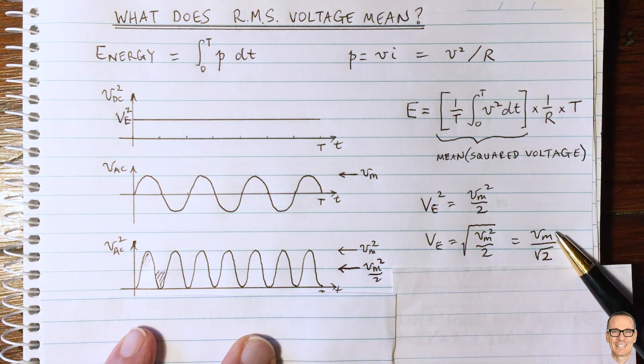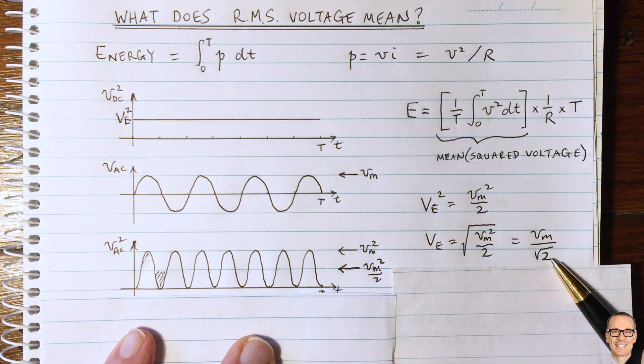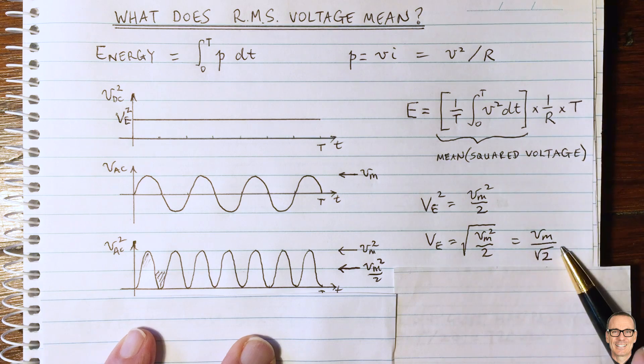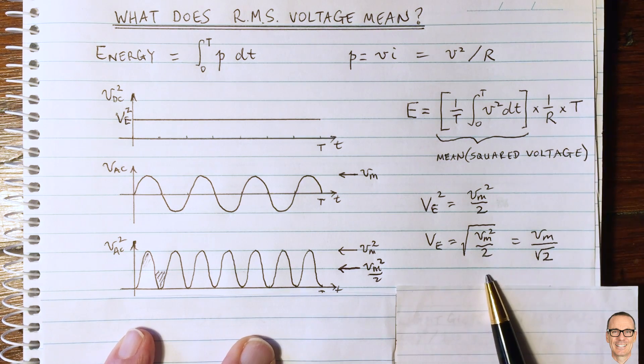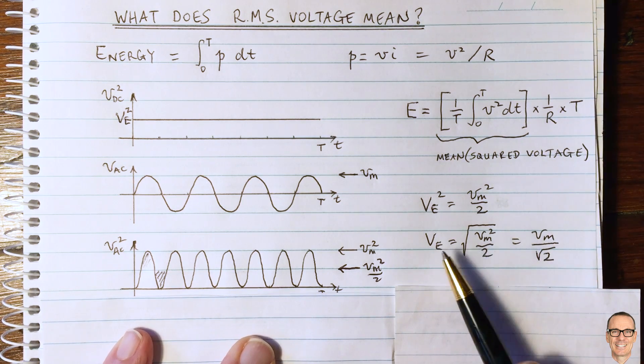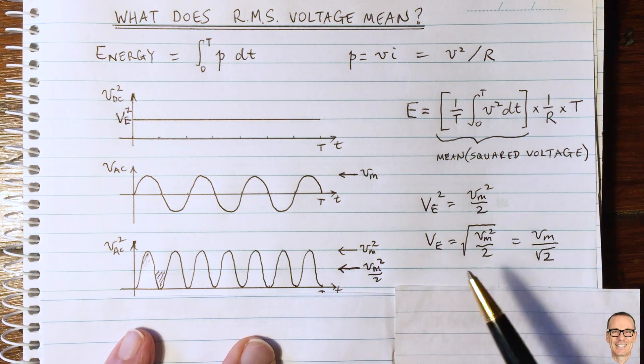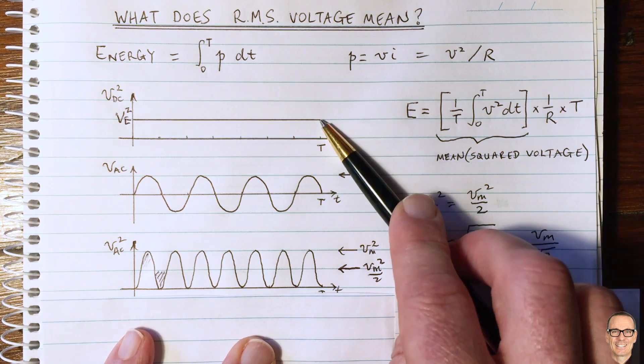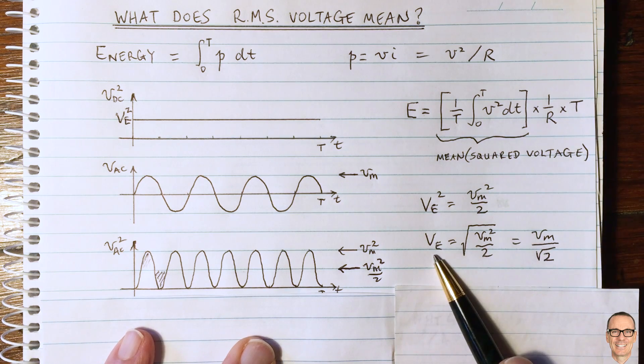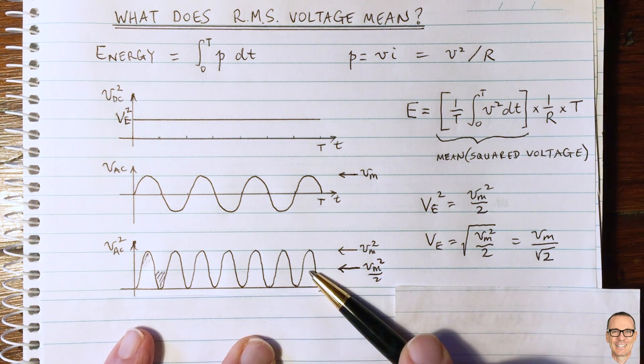And of course, also that equals Vm divided by the square root of 2. So why is this so important and so interesting for us? Well, what we can do is we can use the standard equations for voltage and current for a DC circuit, but now we can use it for AC circuits as well, as long as we use the RMS values.